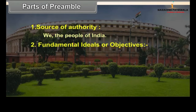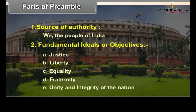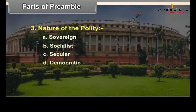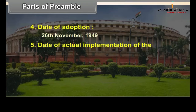The second part covers the fundamental ideals or objectives: A. Justice, B. Liberty, C. Equality, D. Fraternity, E. Unity and integrity of the nation. The third part is the nature of the polity: A. Sovereign, B. Socialist, C. Secular, D. Democratic, E. Republic. The fourth part is the date of adoption: 26th November 1949. The fifth part is the date of actual implementation of the constitution: 26th January 1950.